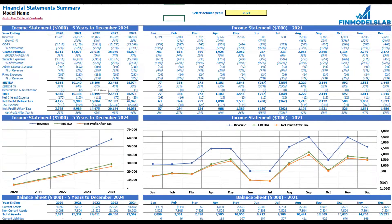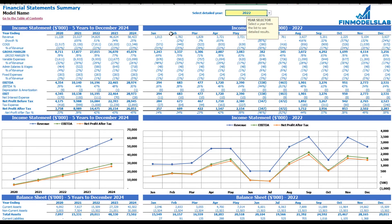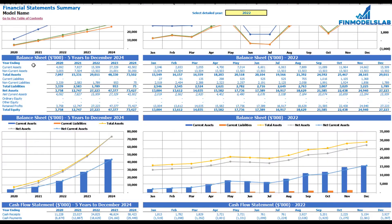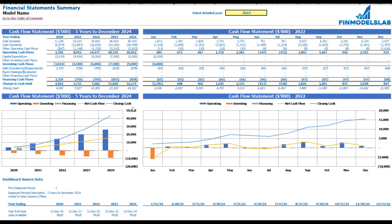The summary of all three statements can be found on the financial statement summary tab. On the top you have the income statement broken down by five years, and a selected year broken down by months — you can change the selected year here — with the same information shown in chart form below. The next set of tables and charts shows balance sheet main KPIs by five years and selected year by months, and finally the cash flow statement for five years and 12 months with charts.